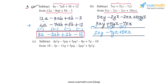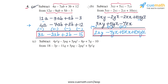Then we have the term 10xyz which has no corresponding term in the second expression, so we simply copy it into the answer, giving us 10xyz. So the expression obtained by subtracting is 2xy minus 7yz plus 5zx plus 10xyz. This is the answer for part b.